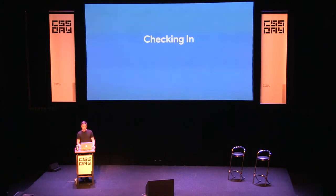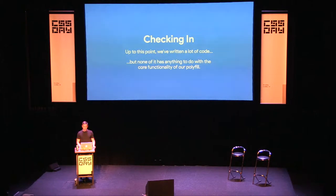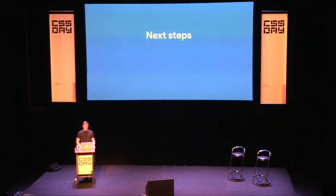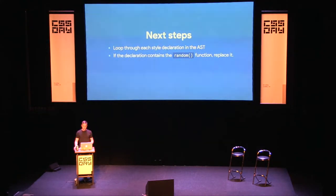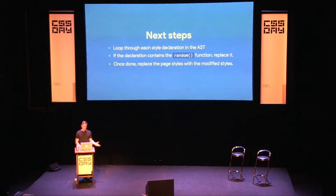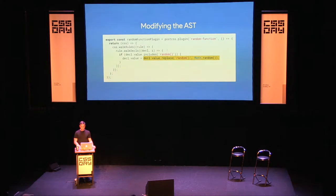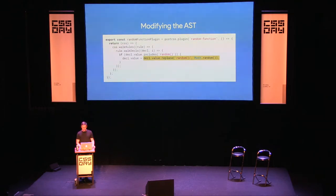So let's check in at this point. We've written a fair amount of code and been talking for a while, but we haven't done anything even remotely related to the polyfill we're trying to write. This is a big problem with CSS polyfills — you spend so much time on things unrelated to your actual task. But let's keep moving. Next steps: loop through style declarations in the AST, look for declarations containing `random()`, replace them, then stringify the AST back to CSS and put it in the document.